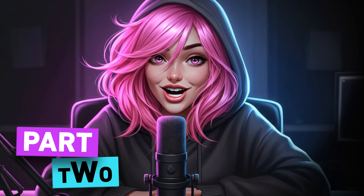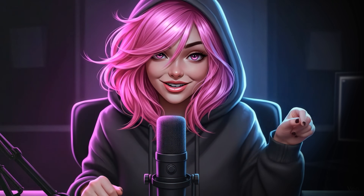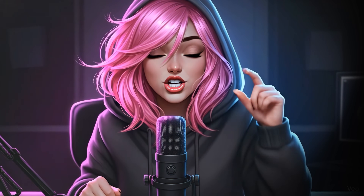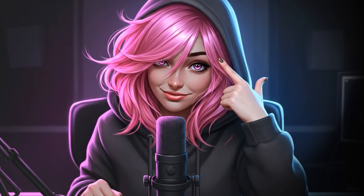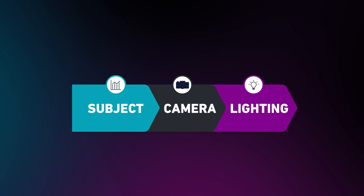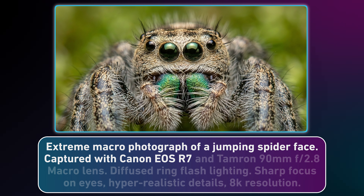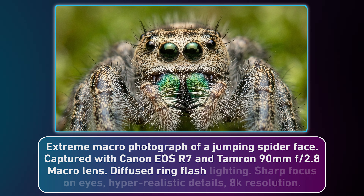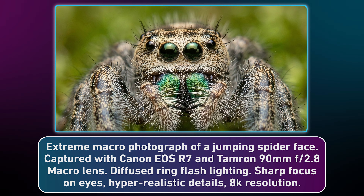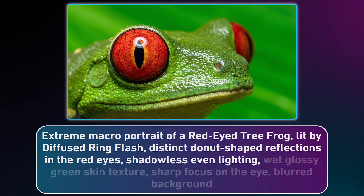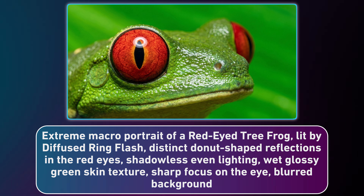Now let's focus on the art. If you just type 'spider' you get a cartoon. If you want National Geographic realism, you need to speak in their language — and that language is actually a simple formula: subject plus camera plus lighting. Instead of saying 'close-up of a bug,' you type 'captured with Canon R7 and Tamron 90mm macro lens.' Suddenly the AI understands the physics. For lighting, instead of 'bright,' you type 'diffused ring flash.' That gives you that soft scientific studio look.